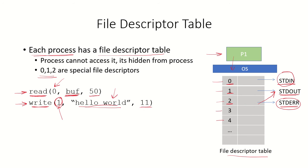Whenever a process wants to read or write from an I/O device, it uses system calls because it cannot access the file descriptor table directly. It uses these file descriptors to access resources. The process issues a call to the operating system, which accesses the file descriptor table and sends the output — like "hello world" — to the standard output.